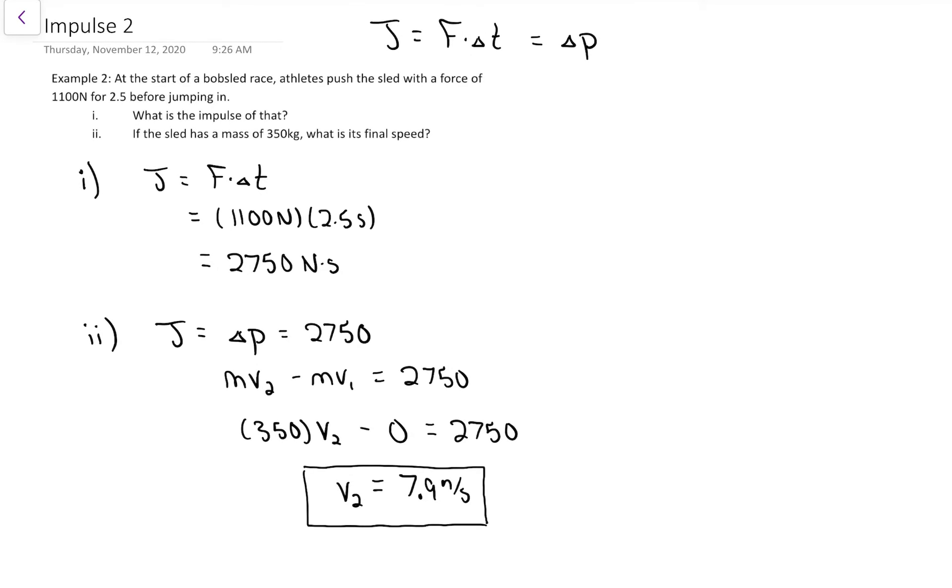If we had jumped straight to part 2, you could probably tackle that with just using Fnet equals MA. Assume that the 1100 is the only force, so that's your Fnet. Use that with the M to get the A, then do some kinematics, and you could get the V2.